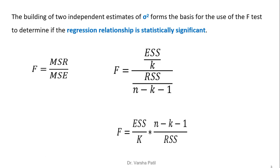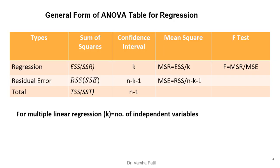If we arrange this we get the F-test formula. We can also obtain the F-test formula in terms of R-square. When solving the problem, we require ESS, RSS, TSS, k, n minus k minus 1, and n minus 1 to obtain MSR and MSE, and from that we can compute the F-test.